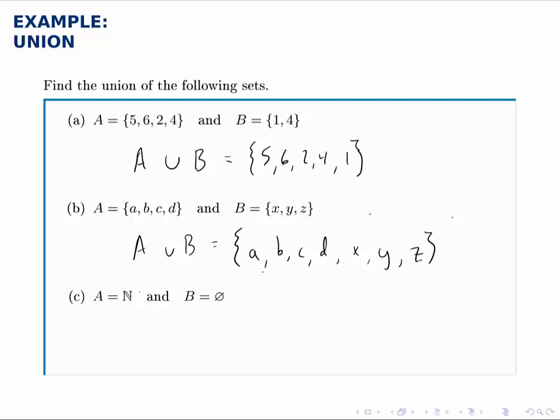For part C, A union B, we'll start with all the natural numbers, and then add in the empty set. Well, the empty set has no elements, so if we add nothing to the natural numbers, we have still the natural numbers. And this is true for any set.